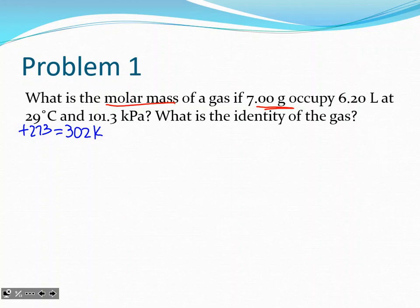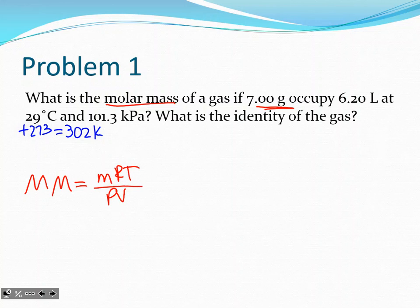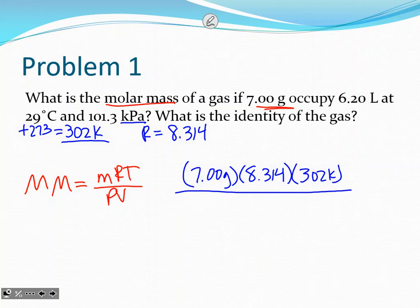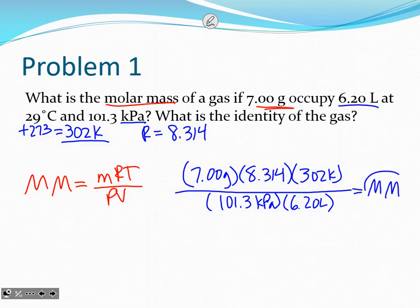We use molar mass = mRT / PV. You can memorize it or derive it; your formula sheet is available. Plug in: 7 grams for mass, R = 8.314 (L·kPa)/(mol·K) because we have kPa, T = 302 K, P = 101.3 kPa, and V = 6.2 liters.